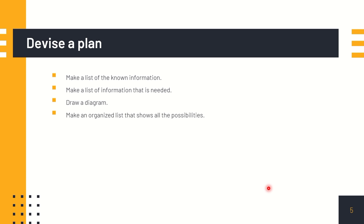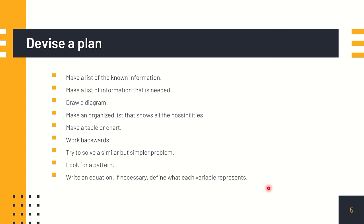Draw a diagram. Make an organized list that shows all the possibilities or solutions. Make a table or chart. Work backwards. Try to solve a similar but simpler problem so that you have a pattern to solve the given problem. Look for a pattern. Write an equation if necessary. Define what each variable represents. Perform an experiment. Guess at a solution and then check your results. So you can do trial and error, guess and check.